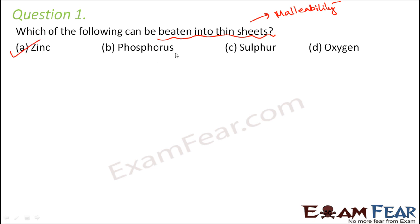Phosphorus non-metal, not malleable. Sulphur non-malleable. Oxygen non-malleable. So the correct option is zinc.